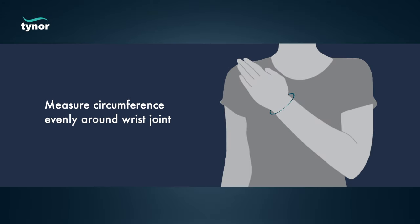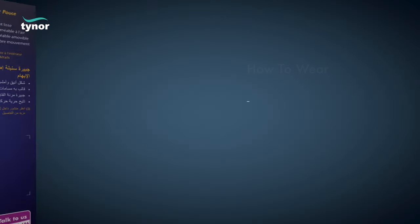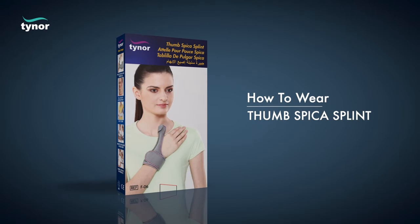Measure the circumference evenly around the wrist joint. Now let us see how to wear the thumb spica splint.